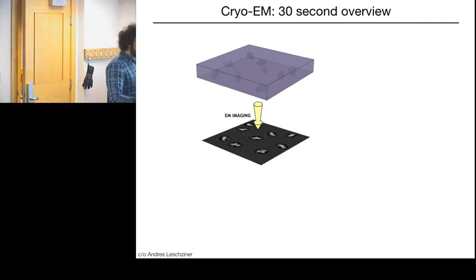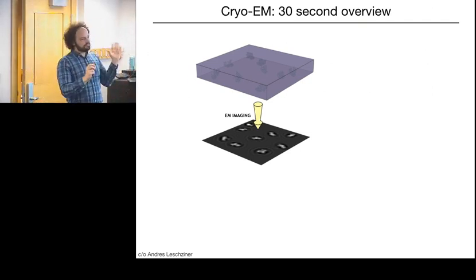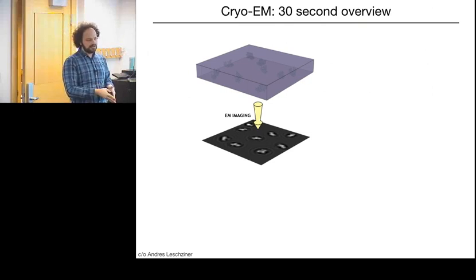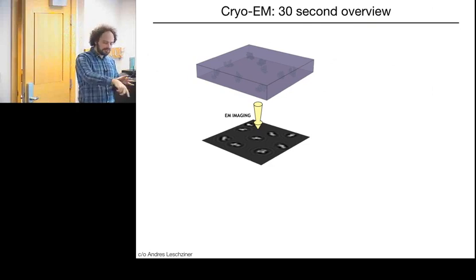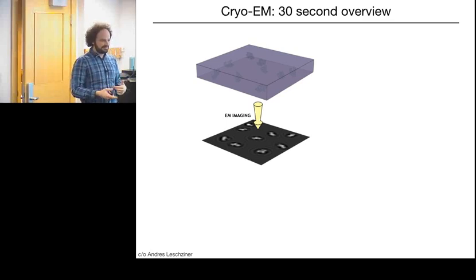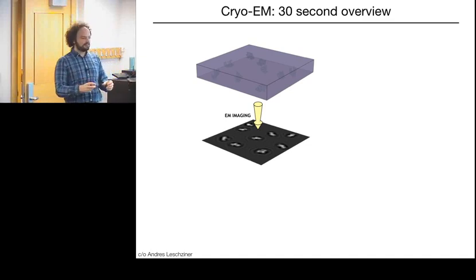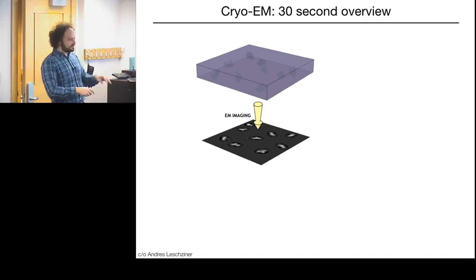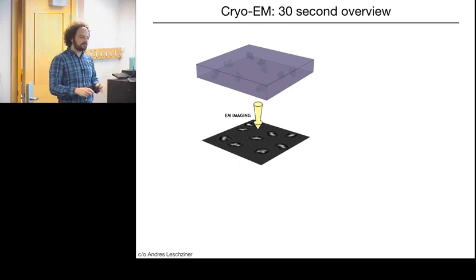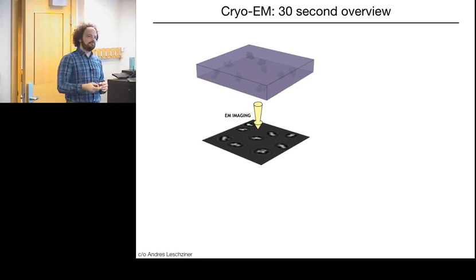The freezing is done by taking your protein, putting it on a grid, blotting it, then plunging it into liquid ethane. Liquid ethane is cooled at liquid nitrogen temperatures — around minus 170 Celsius, around 70 Kelvin. Liquid nitrogen itself has very low specific heat, so it doesn't freeze things quickly enough; the water has time to reorient and crystallize. But with liquid ethane, the specific heat is much higher, so it actually stops the water from moving. Ethane or propane in liquid form is what we use.